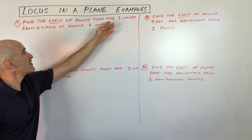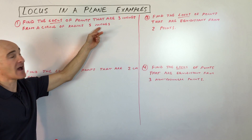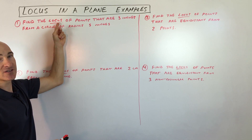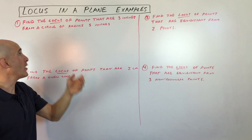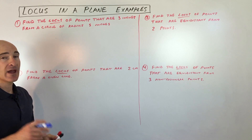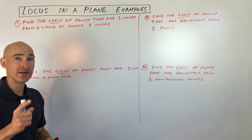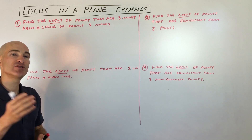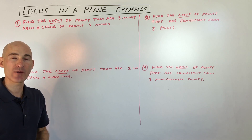Find the locus of points that are three inches from a circle of radius five inches. When I see the word locus, automatically I'm thinking 'set of points.' The first thing you want to do is find just one point, then two points, then three points. Once you establish a pattern, you've got the set of points and can describe what that set looks like.